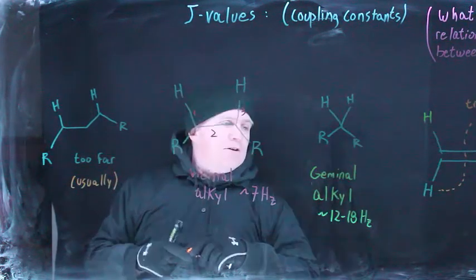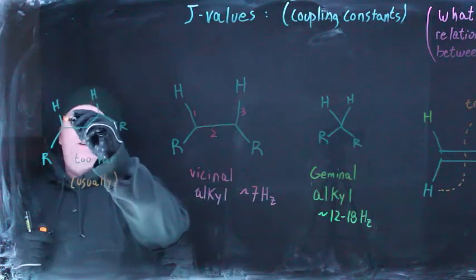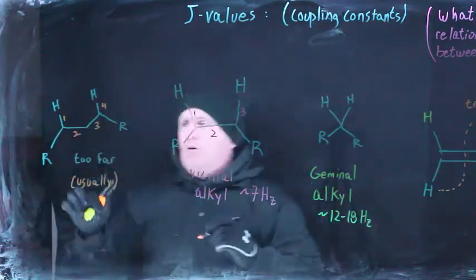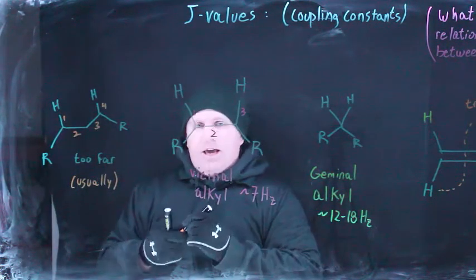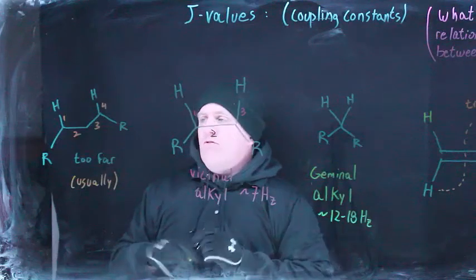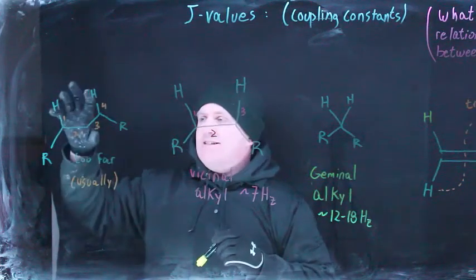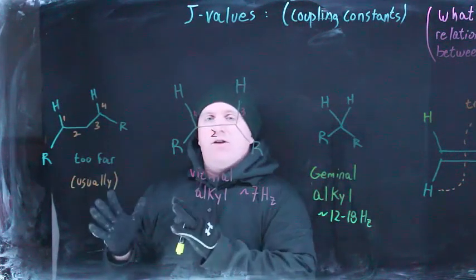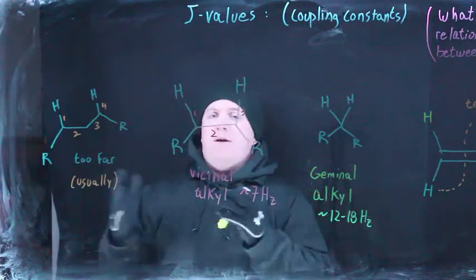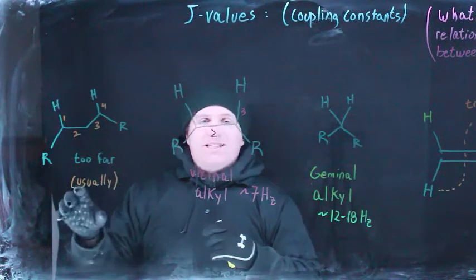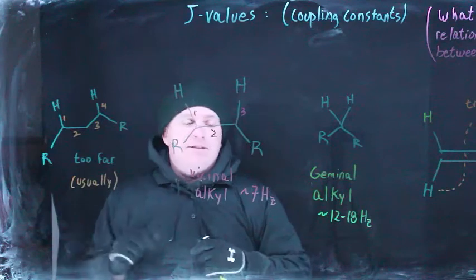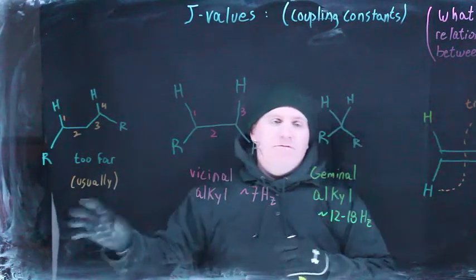If instead you have a four bond relationship between hydrogens in a normal, typical straight chain alkane, that's too far. You usually cannot see that. The distance is too great, so that the J value becomes so small that you can't see it, maybe on the order of half a hertz or smaller. This tends not to show up, you tend not to see it.